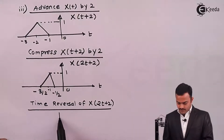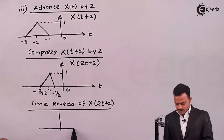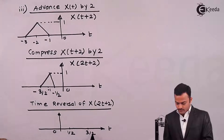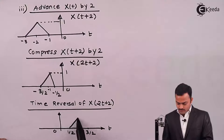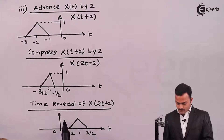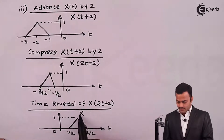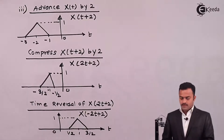After the time reversal, the signal we obtain will have the span from 1/2 to 3/2 without changing the magnitude, which is 1. So the signal obtained is X of minus 2t plus 2. Let's go to the next operation.